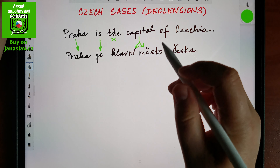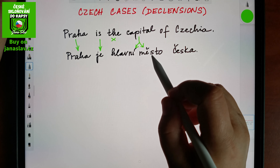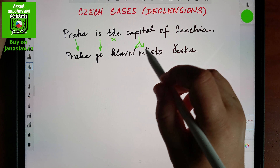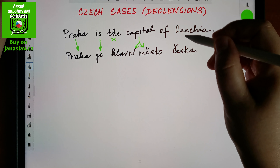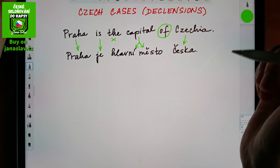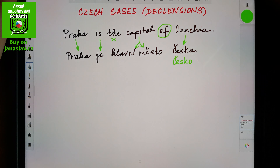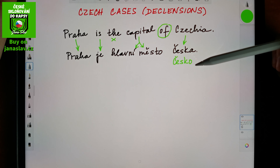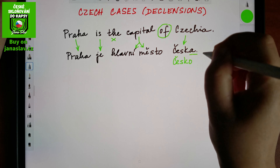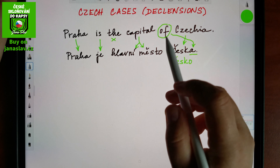For 'capital,' in Czech we do not have one word — we would say hlavní město, so that's like 'main' and 'město' meaning city. And then we have Czechia, which would be Česko. But notice: in the sentence we don't have Česko, we have Česka — and that's kind of where the 'of' is translated or hidden.